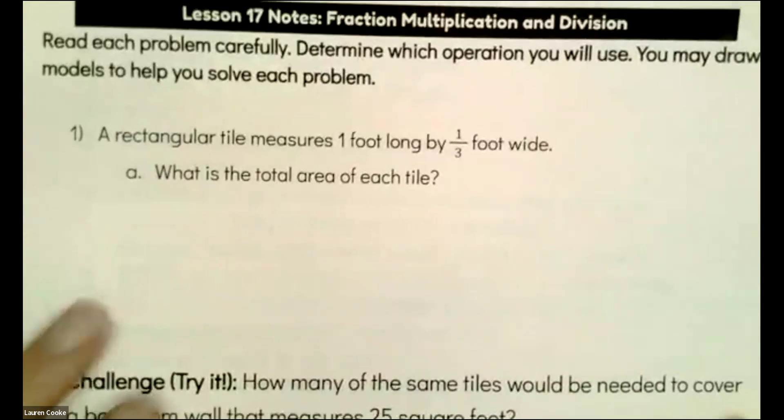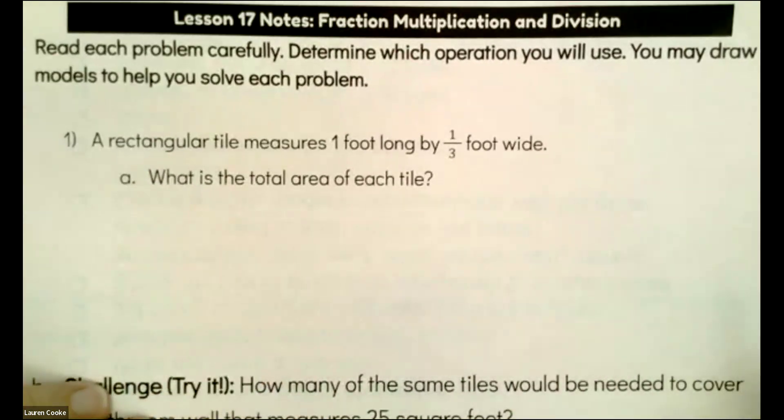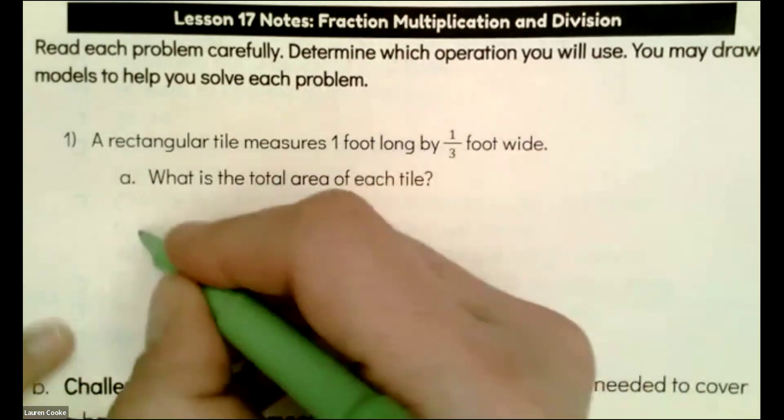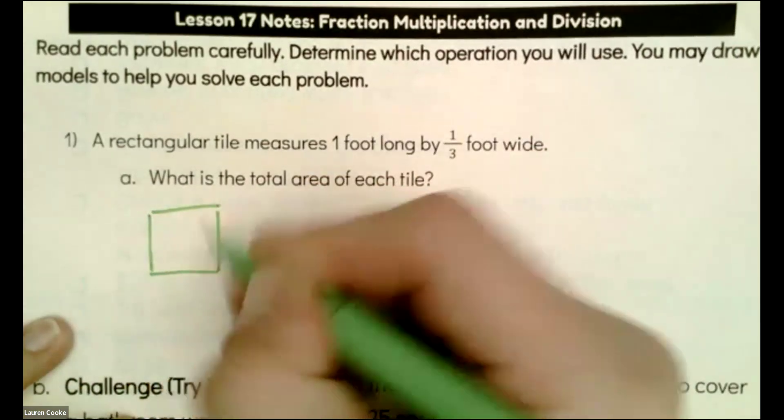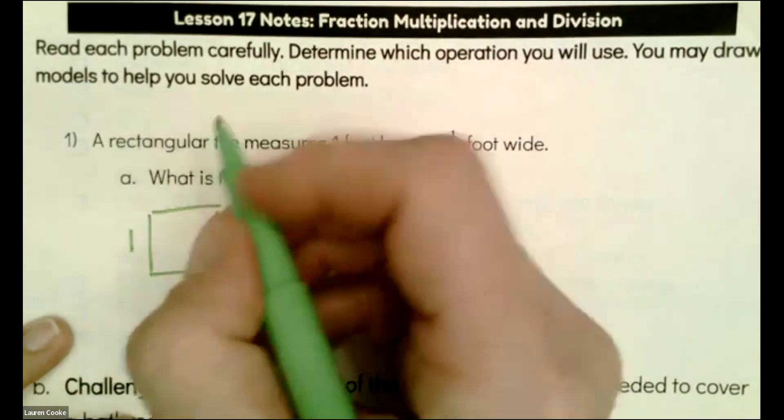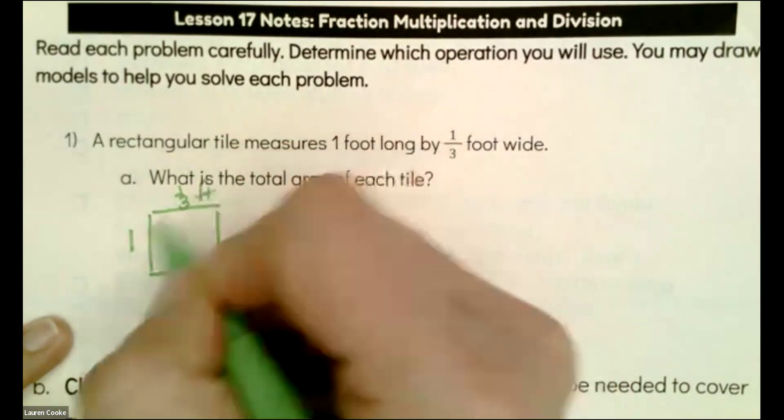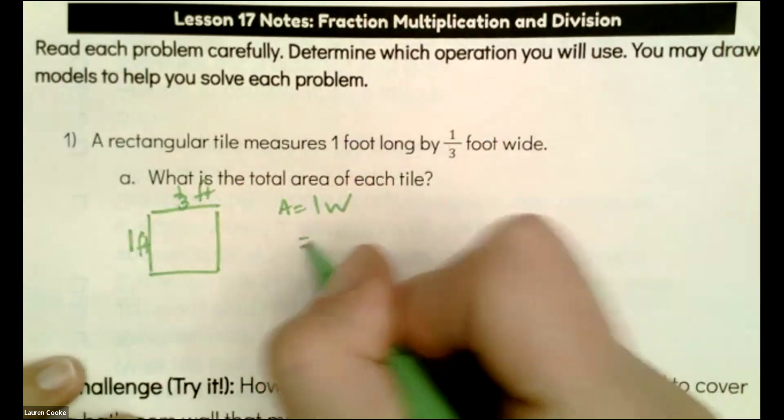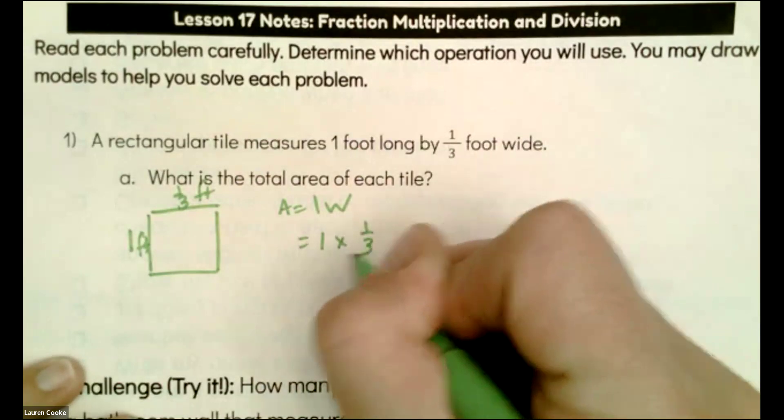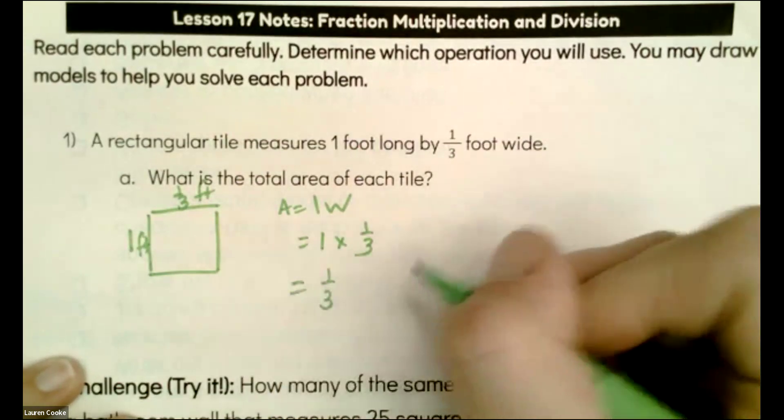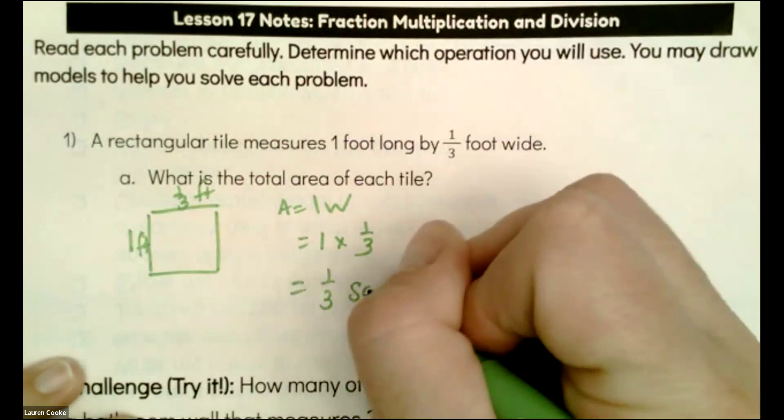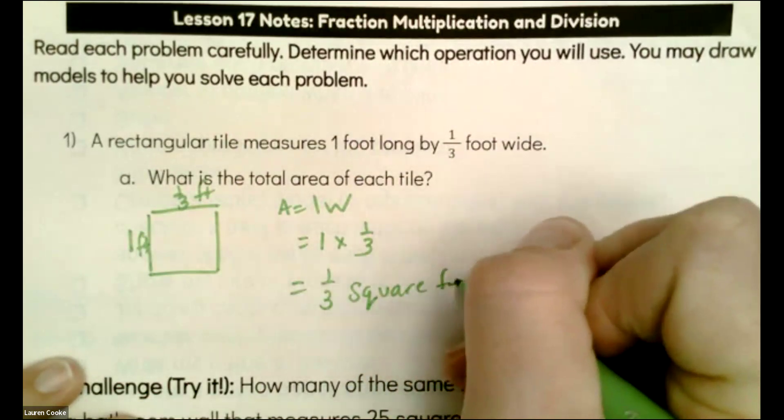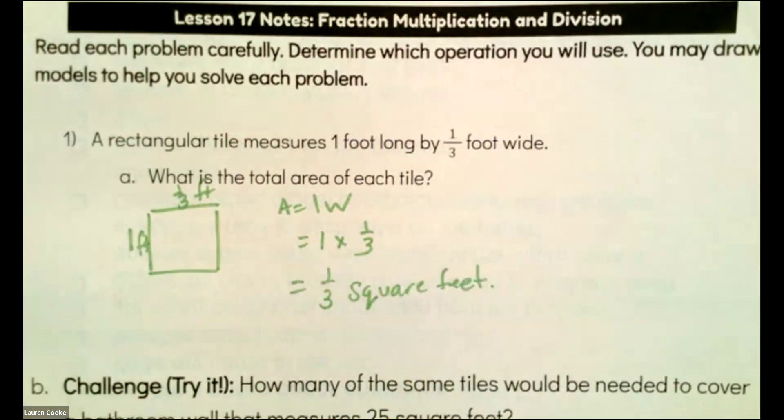A rectangular tile measures one foot long by one-third foot. Let's see what that looks like. Rectangular one and then one-third foot. I know area is length times width. So I'm going to have one times one-third. I'm going to get one-third square feet. That's the area of each tile.